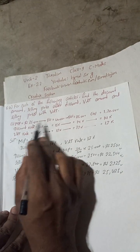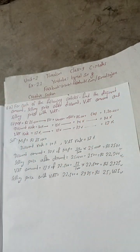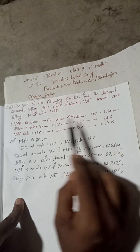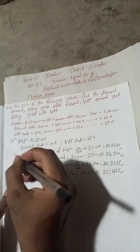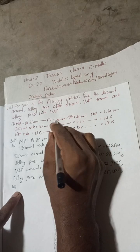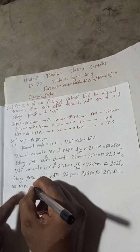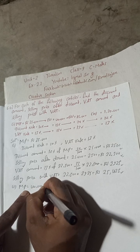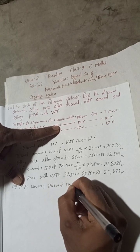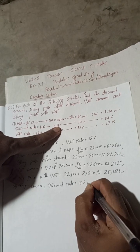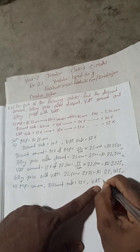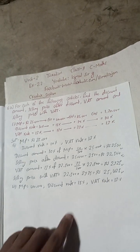Now number 2. For number 2, marked price is given — let's write it as MP — discount rate is equal to 15%, and VAT rate is equal to 13%.